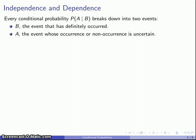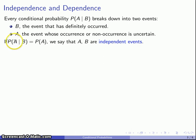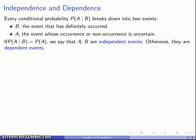It's entirely possible that knowing B has occurred does not change our estimate of confidence that event A will occur. So it's possible that the probability of event A, given that we know B has occurred, is the same as the probability of A whether or not we knew B had occurred. In this case we say that A and B are independent events. On the other hand, if our assessment of the probability changes when we know B has occurred, we say the two events are dependent events.